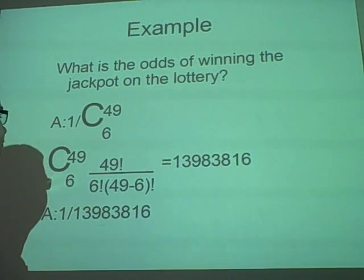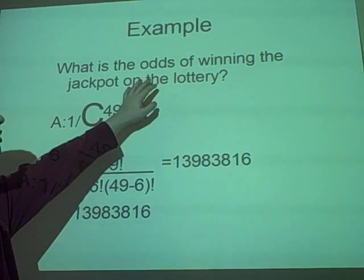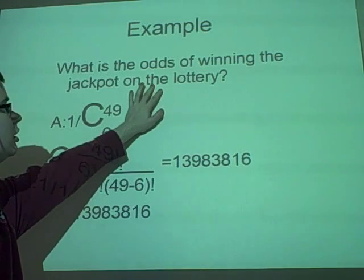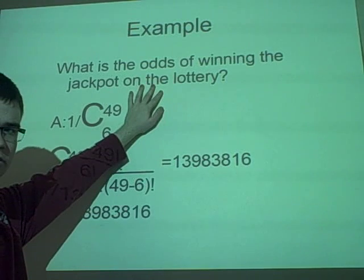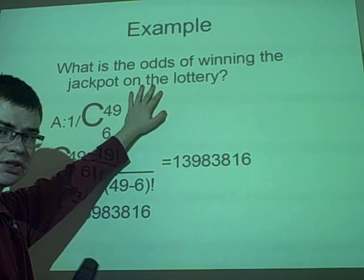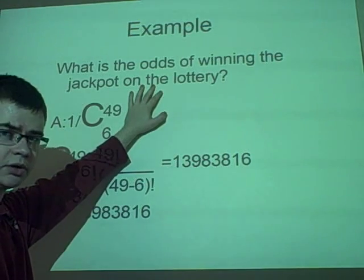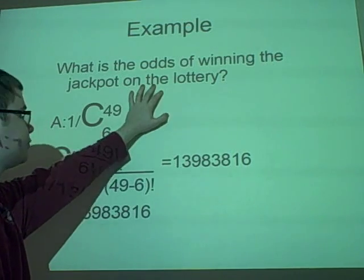There we've got an example. We'll just ignore this for a minute. What are the odds of winning the jackpot on the lottery? Now, if you don't know the lottery, there's forty-nine numbers, and you've got to pick six of them. And if you get all six right, because six balls come out, then you win the jackpot.